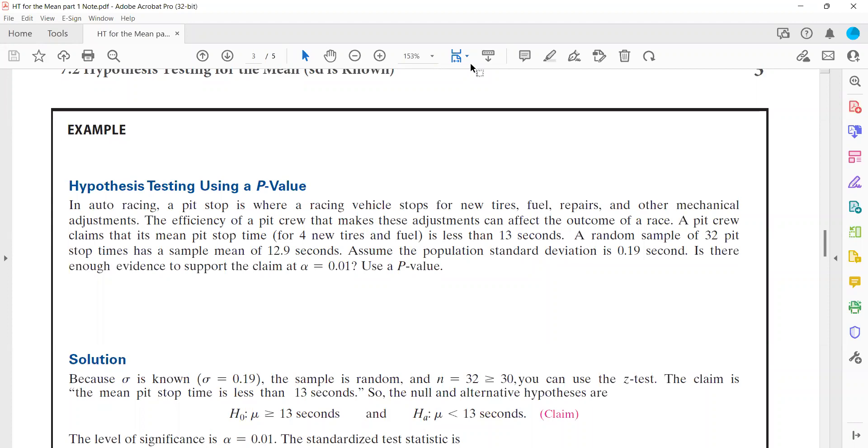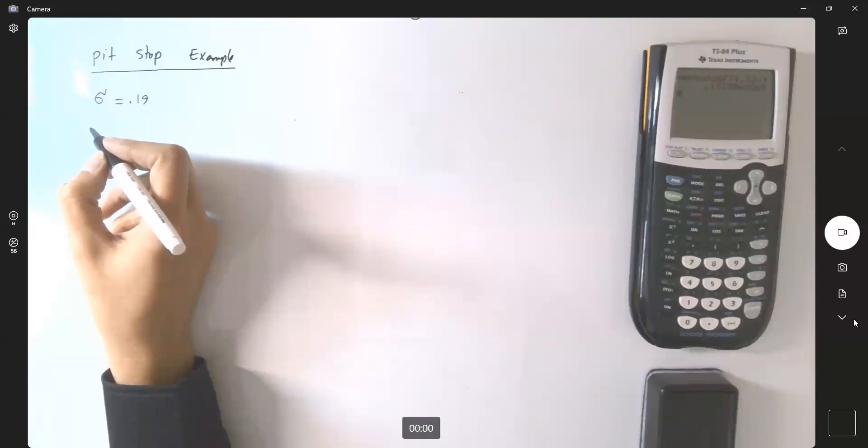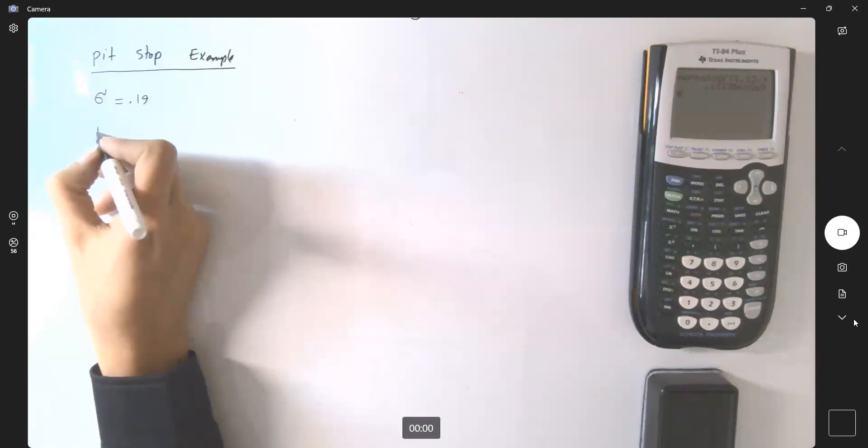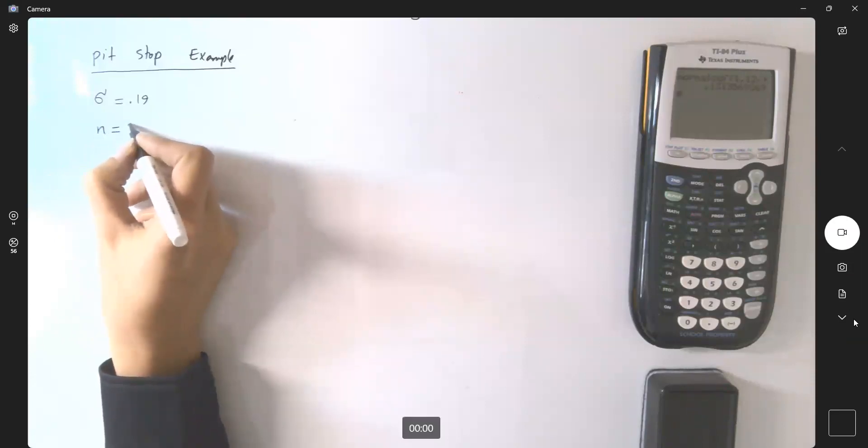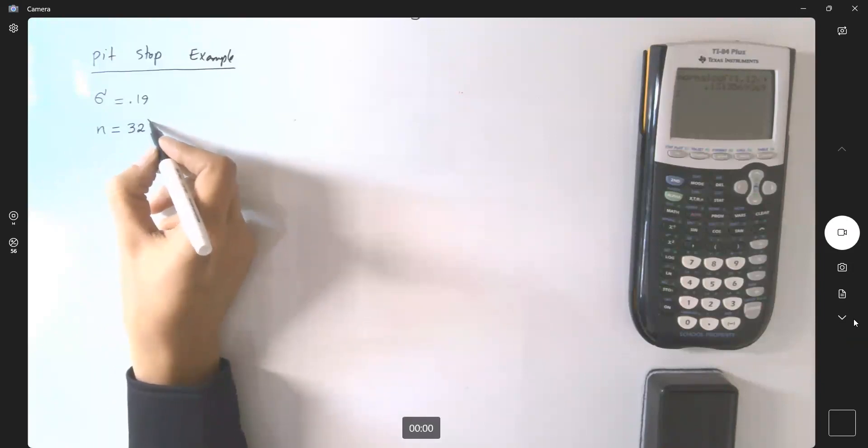Now, is your population normal or is the sample size larger than 30? Remember that you collected 32 pit stop times, and it is larger than 30. So we're good to go to the next step.